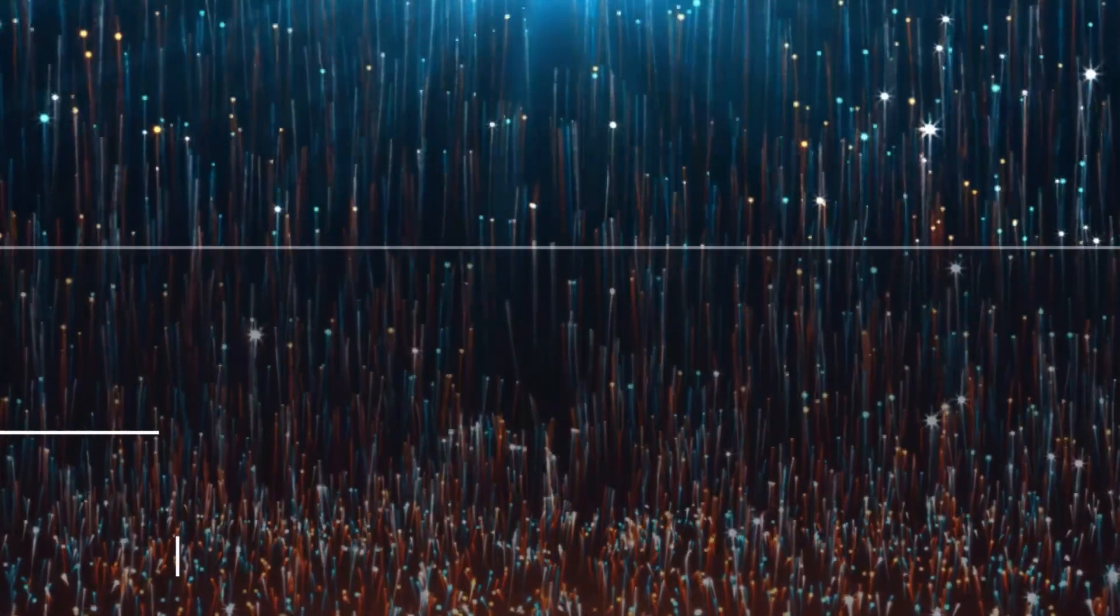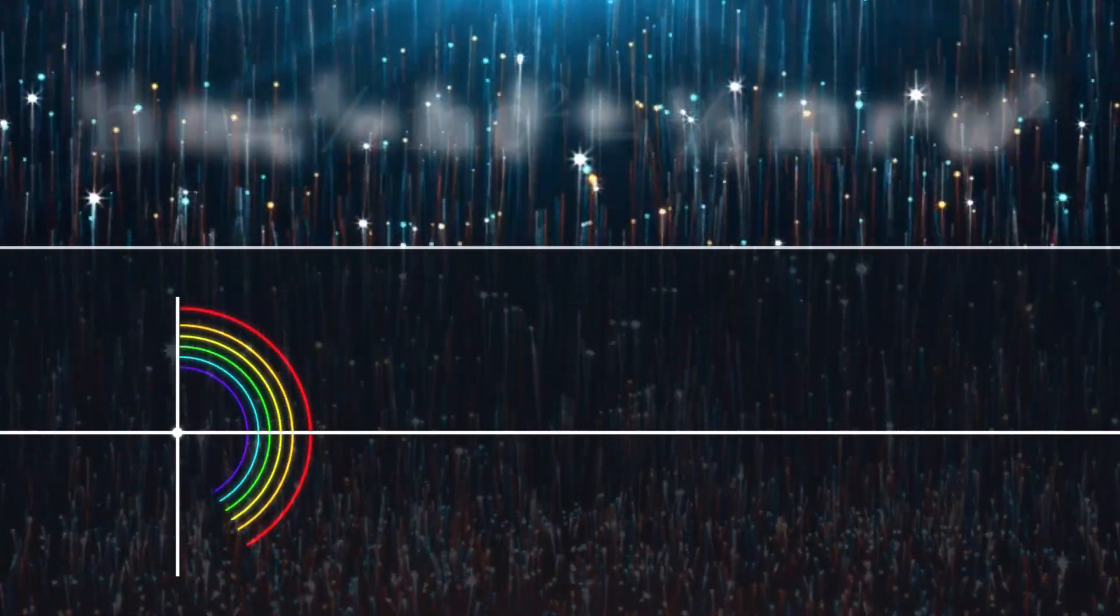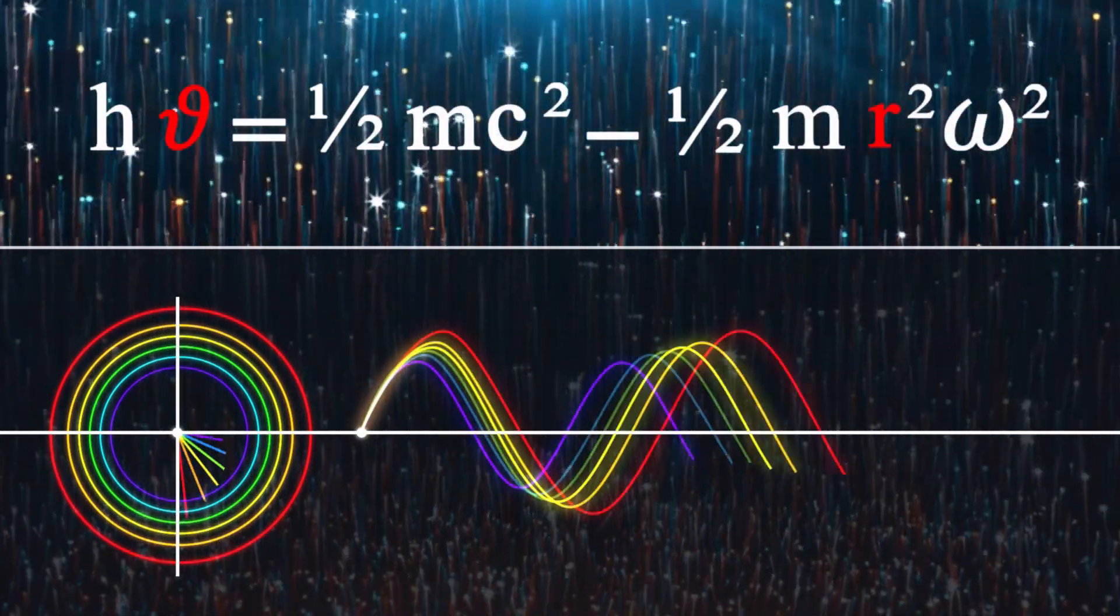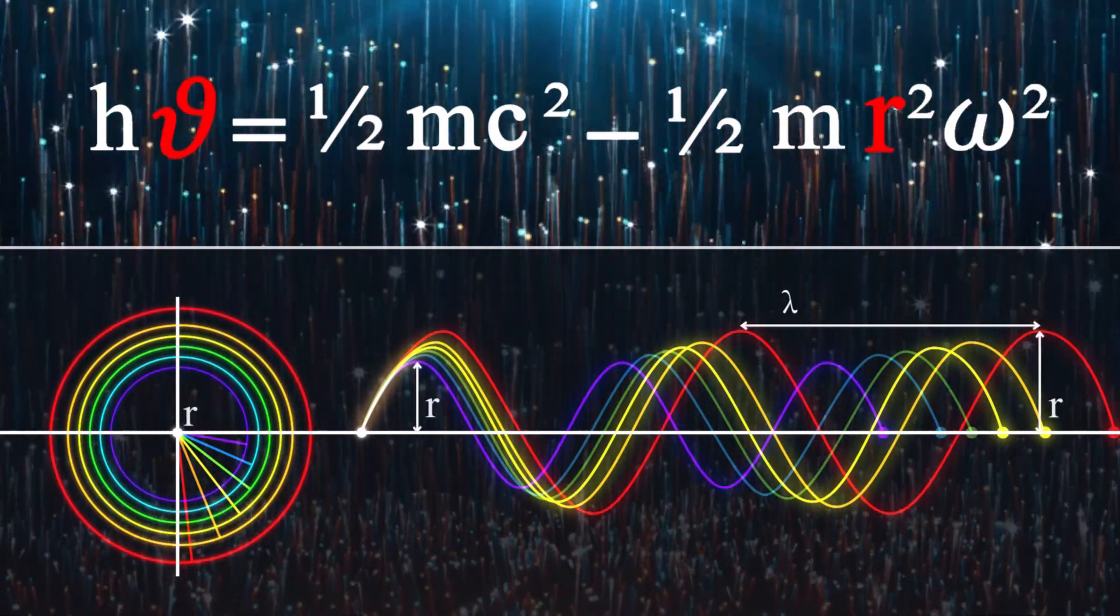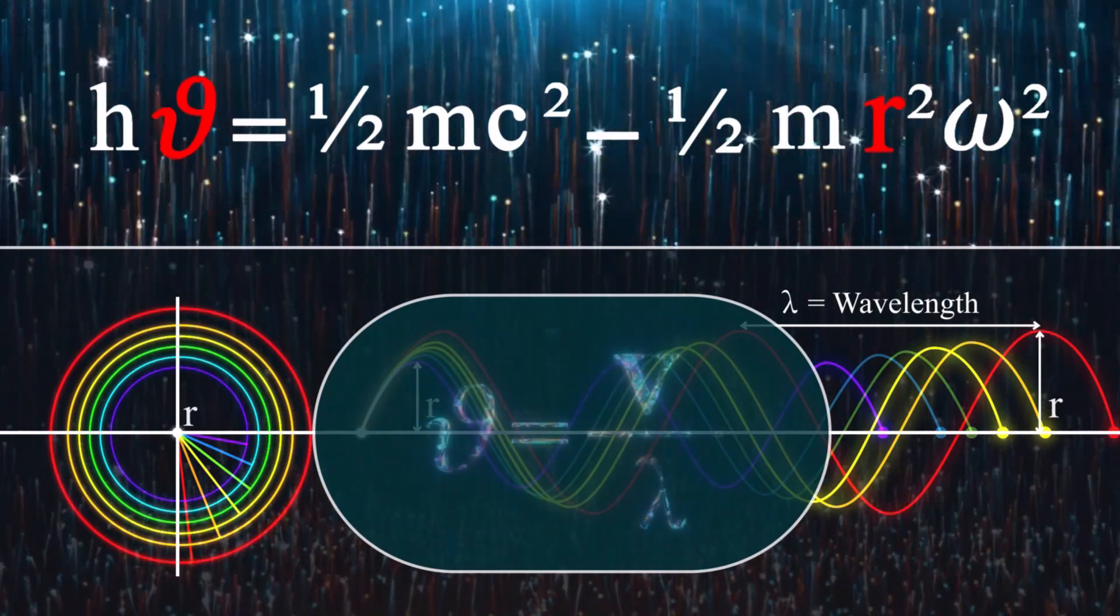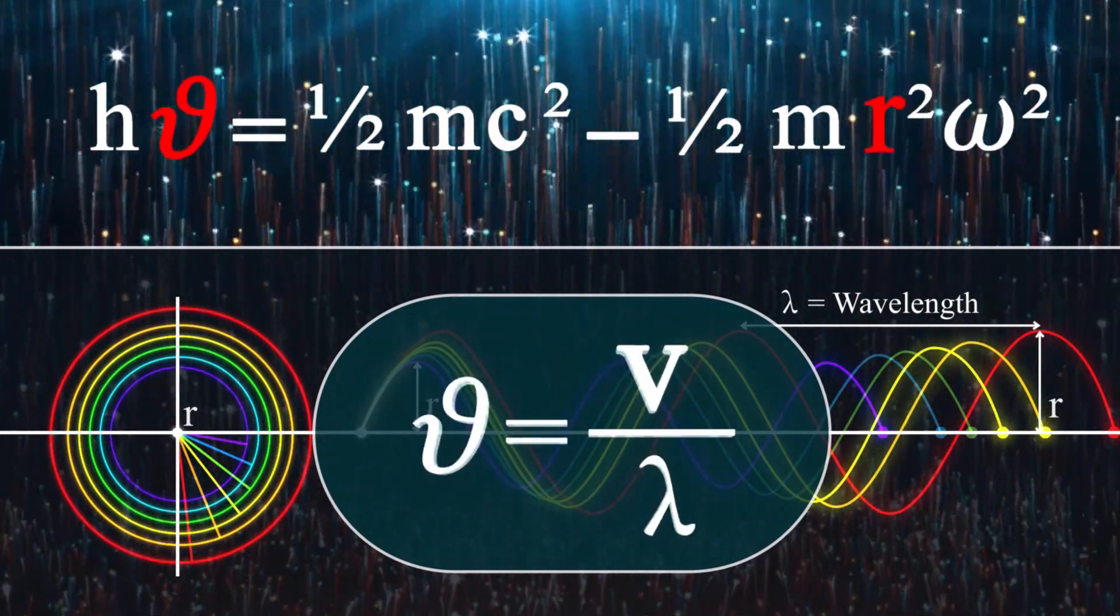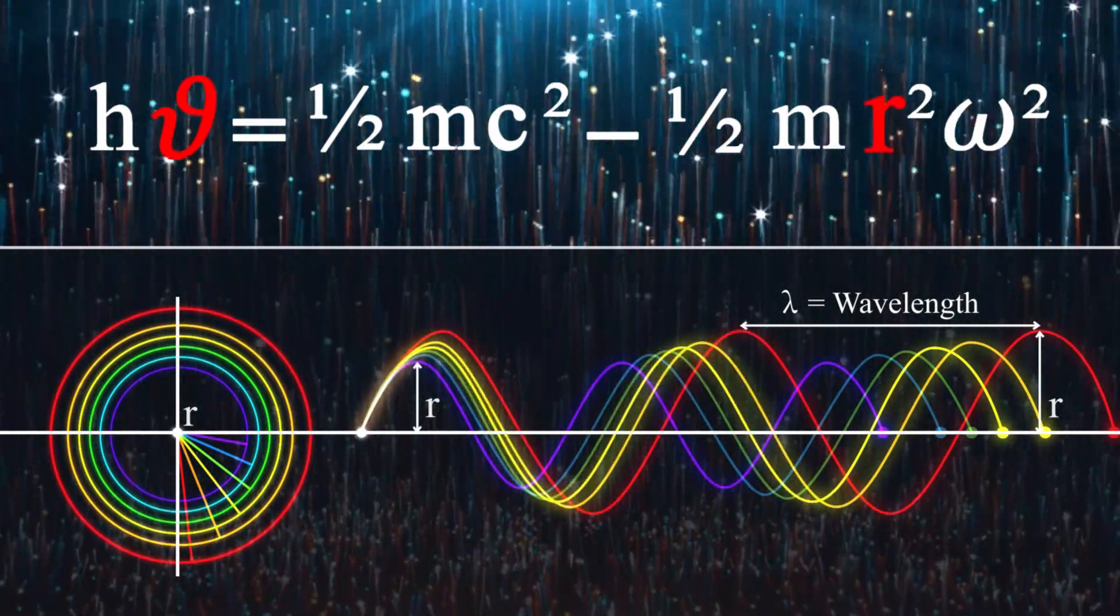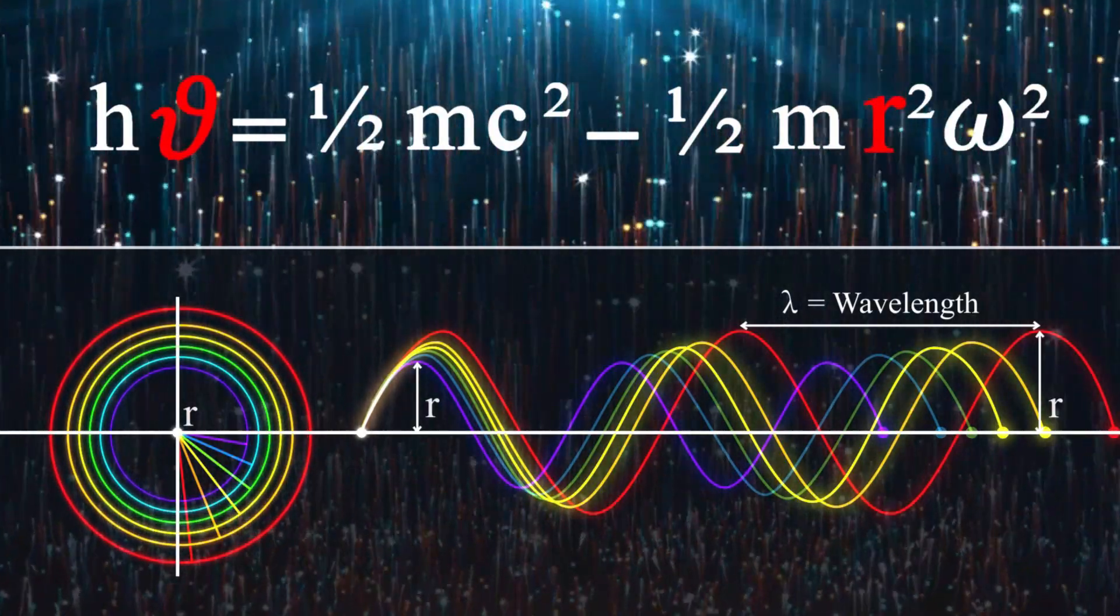The important and interesting point in this new formula for the energy of a photon is that the variables of this equation are homogeneous. As you know, for a wave with constant velocity, the frequency is directly related to the inverse value of wavelength. Therefore the variations of both variables, the rotational radius and the frequency, are the same kind of lengths.